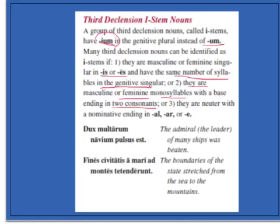And the last rule is for neuters. If a neuter ends in AL, AR, or E in the nominative singular, it will be an I-stem, like mare and animal.